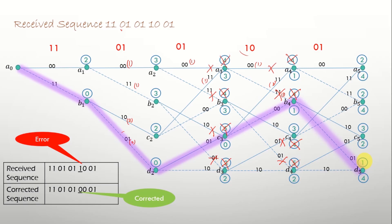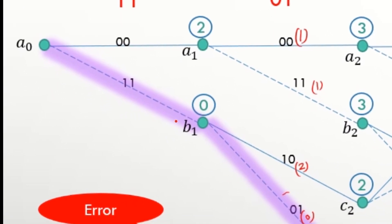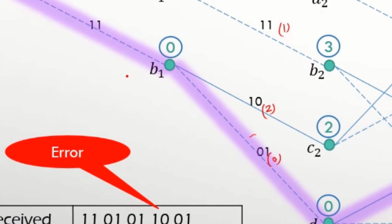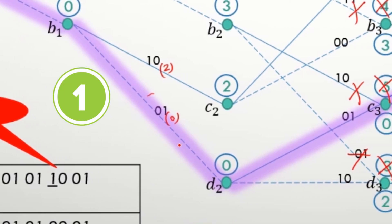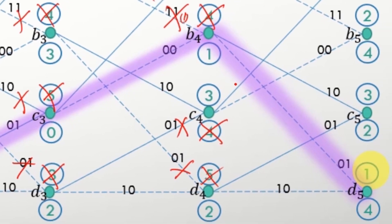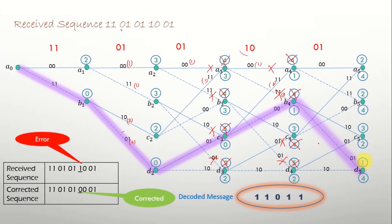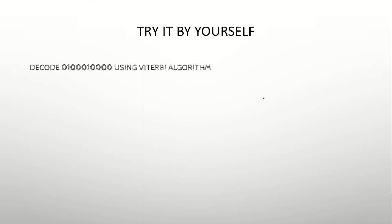Now let's decode the actual message that was transmitted at the transmitter side. Just look at the survivor path: this segment has a dotted line, which means the decoded message bit is 1. Here again a dotted line, so 1. Here it is a solid line which means 0, then 1 and 1. So the decoded message obtained from the Viterbi decoding algorithm is 1, 1, 0, 1, 1. I hope you have understood this. Now try it yourself: decode the sequence using the Viterbi algorithm and post your answers in the comment box. Thanks for watching.